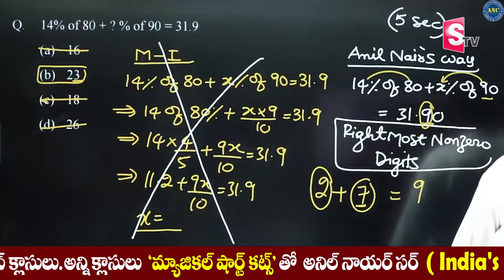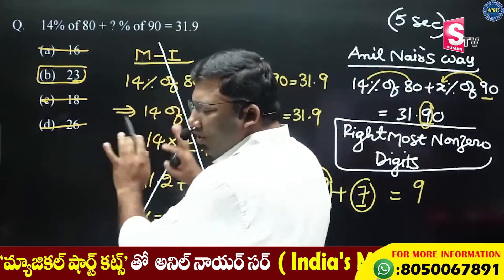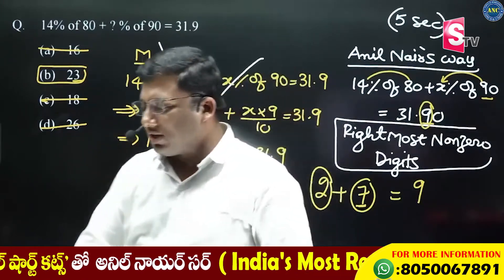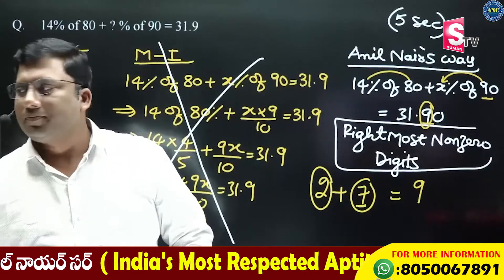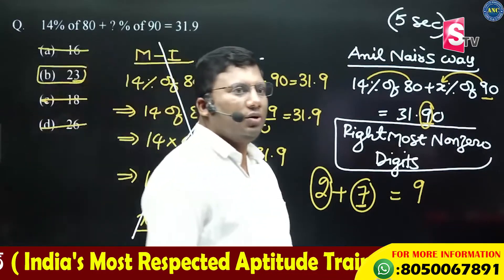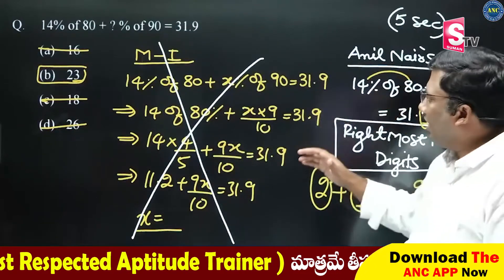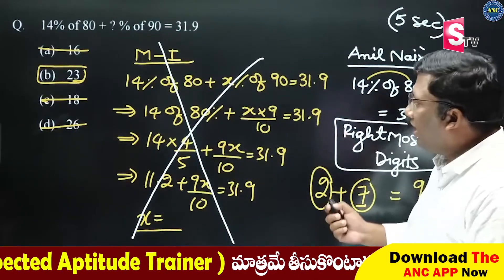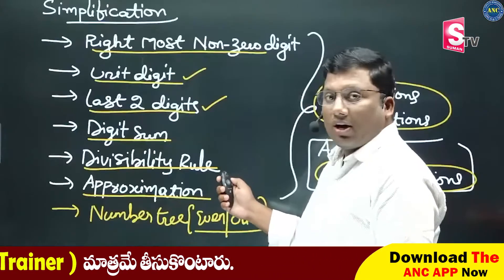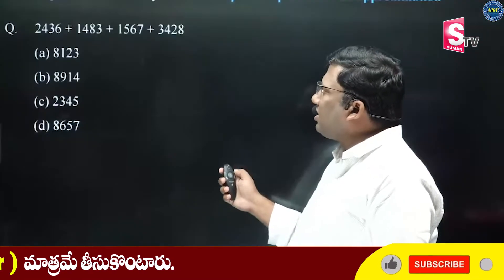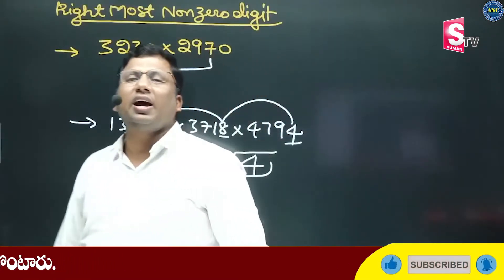The other answer options are distractors. Now answer the original question. You are not going to look at all the answer options — you are going to apply the rightmost non-zero digit method directly.